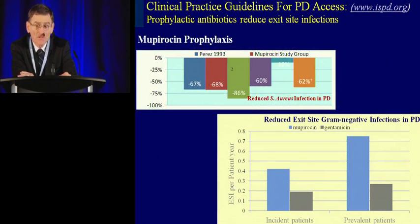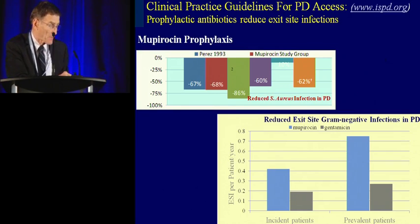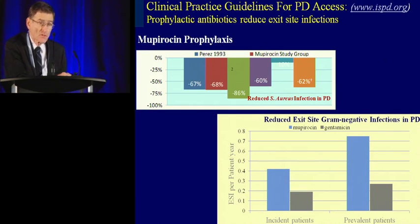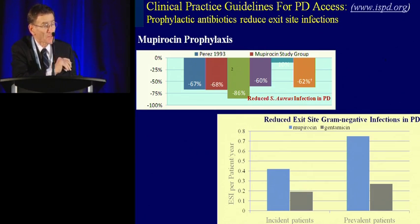Prophylactic antibiotics at the exit site have become the standard of care worldwide. Six studies looked at mupirocin at the exit site and its impact on infection rates — specifically reducing staph aureus infection rates in PD patients, with consistent results across all six studies. There is also a classic paper from the University of Pittsburgh on reducing gram-negative exit site infection rates using gentamicin compared to mupirocin. The standard of care in most units is using gentamicin at the exit site, though some units alternate between gentamicin and mupirocin due to resistance concerns.